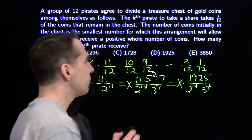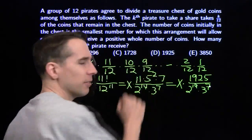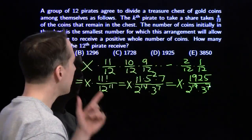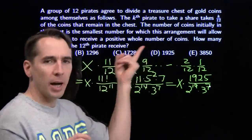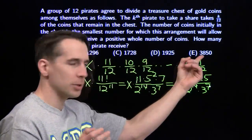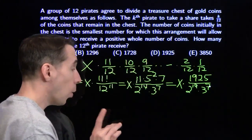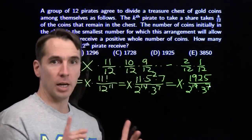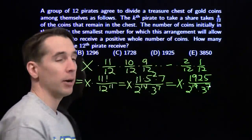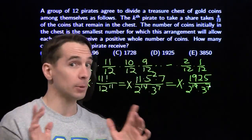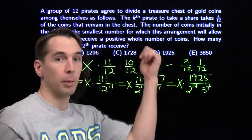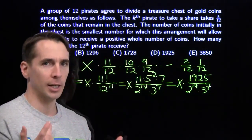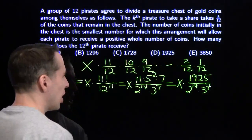You'd be forgiven for just circling 1925 and moving on. But seeing 3850 also as an option is a little alarming, and it reminds me that each pirate has to get a positive whole number of coins — so maybe there's a reason we need to multiply by 2 somewhere. One way to check is to work it through: let x equal 2 to the 14th times 3 to the 7th and verify each pirate gets a positive whole number of coins. If you're short on time, bubble D and move on.